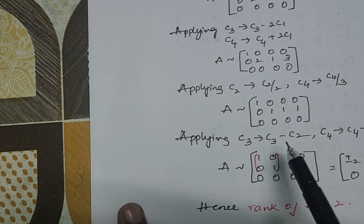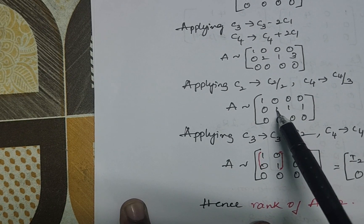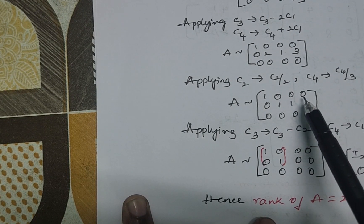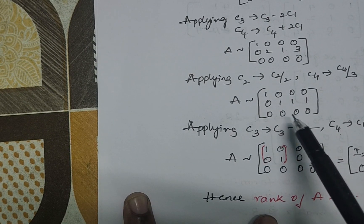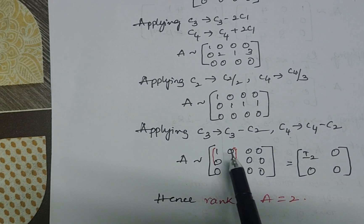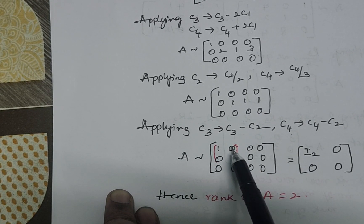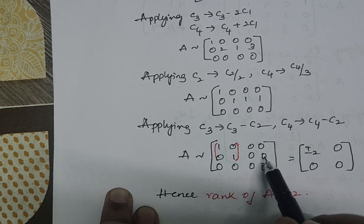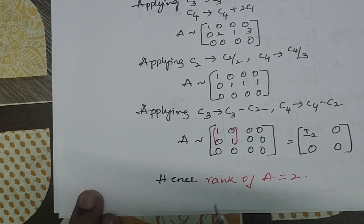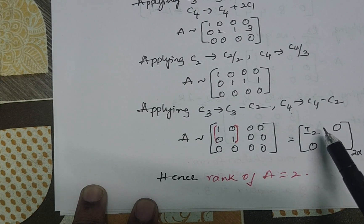Now apply C3 → C3 - C2: entries become 0 - 0 = 0, 1 - 1 = 0, 0 - 0 = 0. And C4 → C4 - C2: entries 0 - 0 = 0, 1 - 1 = 0, 0 - 0 = 0, so these two columns are all zeros. The resulting matrix has a 2×2 identity matrix I_2 in the top-left and zero matrices elsewhere. Hence the rank of this matrix is 2, since we have reduced it to normal form or canonical form.